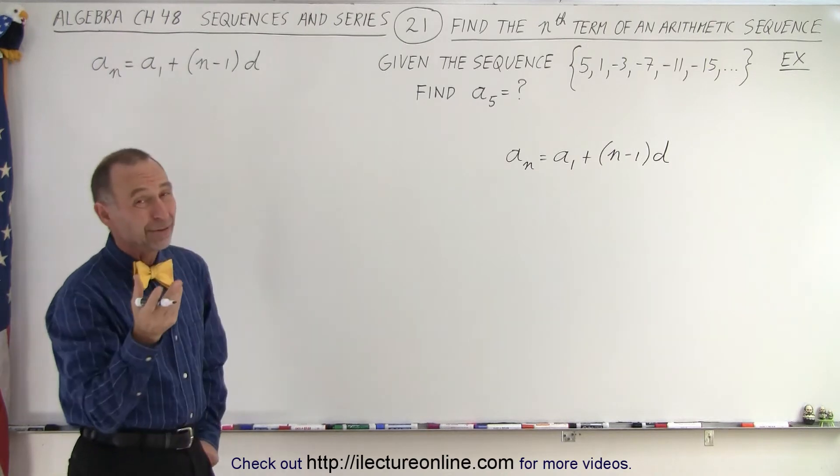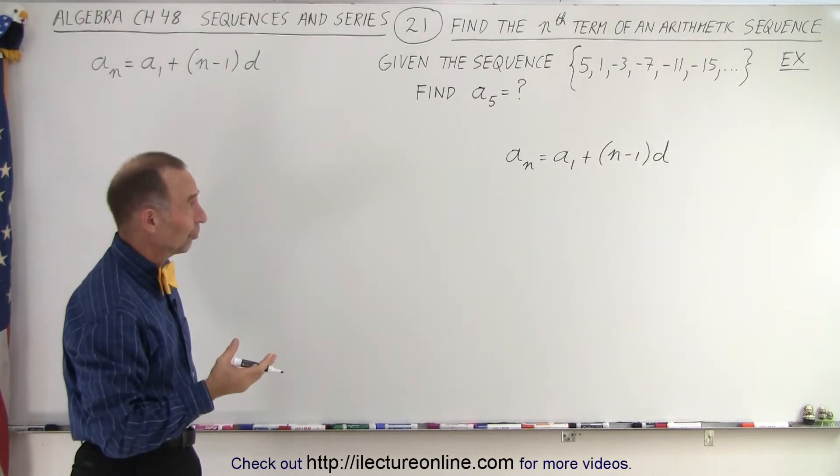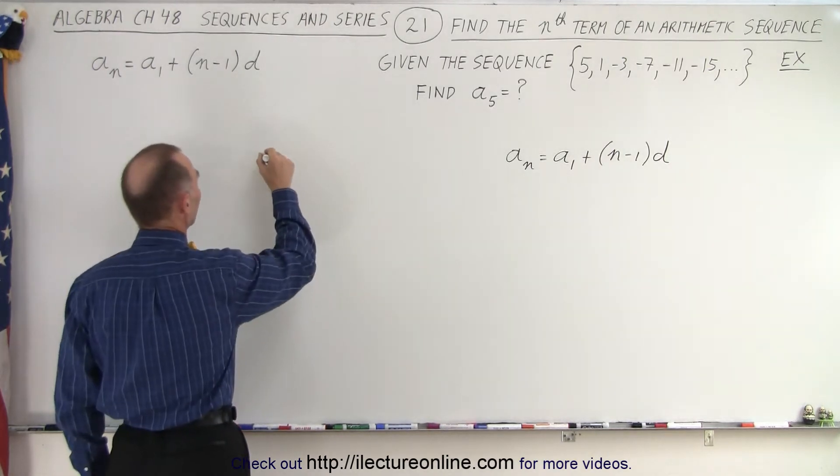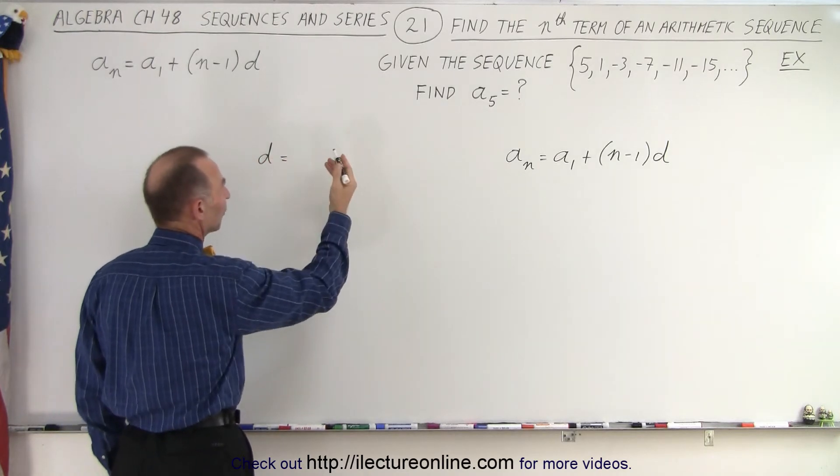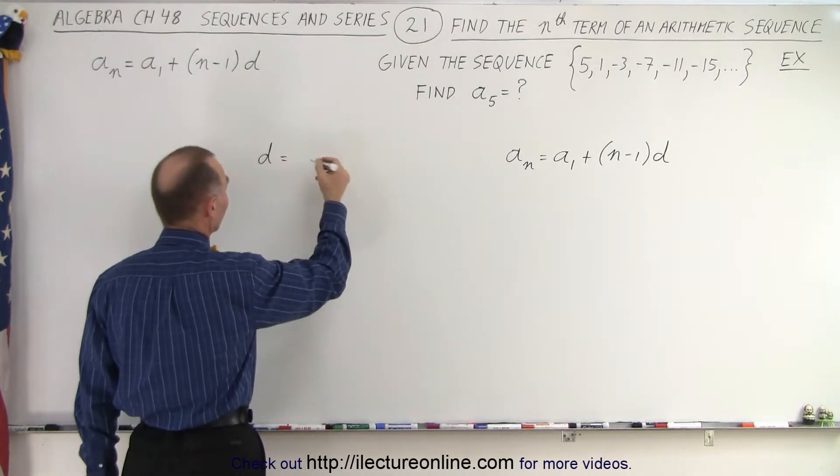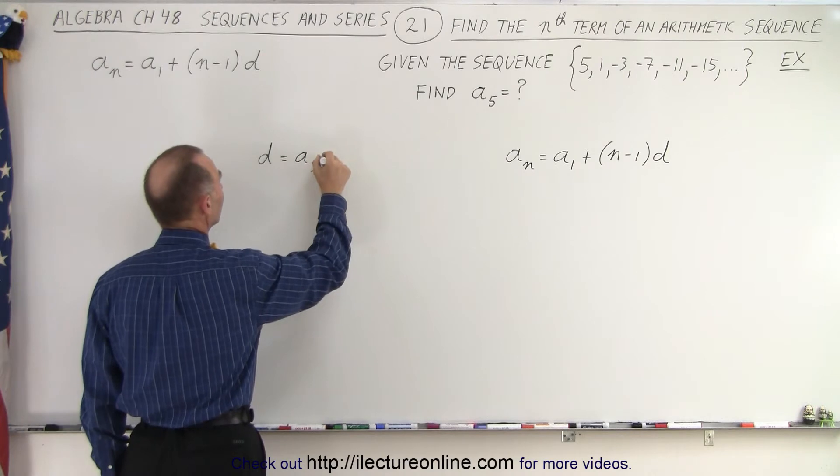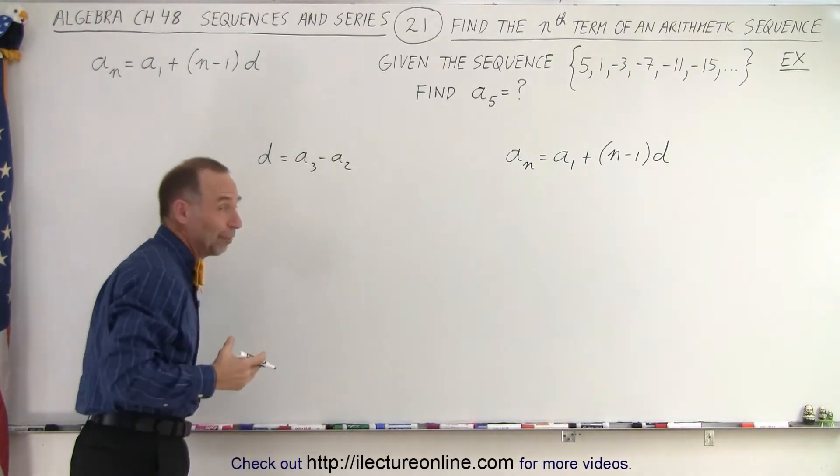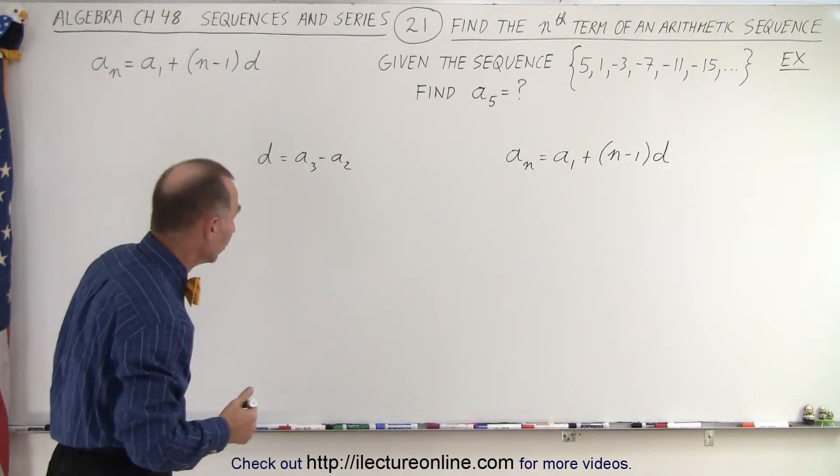All right, well that means we need to find the common difference first. How do we find that? Well we know that the common difference is equal to the difference between two consecutive terms. So let's say it's equal to a3 minus a2. It doesn't matter which two we pick, so any two will do.